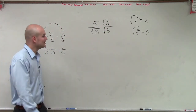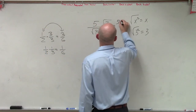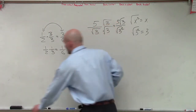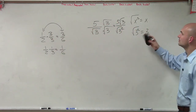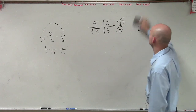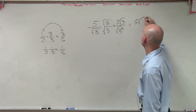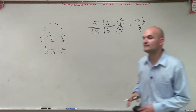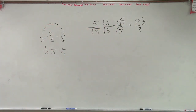So by doing this, I now get 5 times the square root of 3 over the square root of 3 squared. And we figured out that the square root of 3 squared equals 3. So your final answer, which you're going to have to be able to write out, is going to be 5 square root of 3 divided by 3.